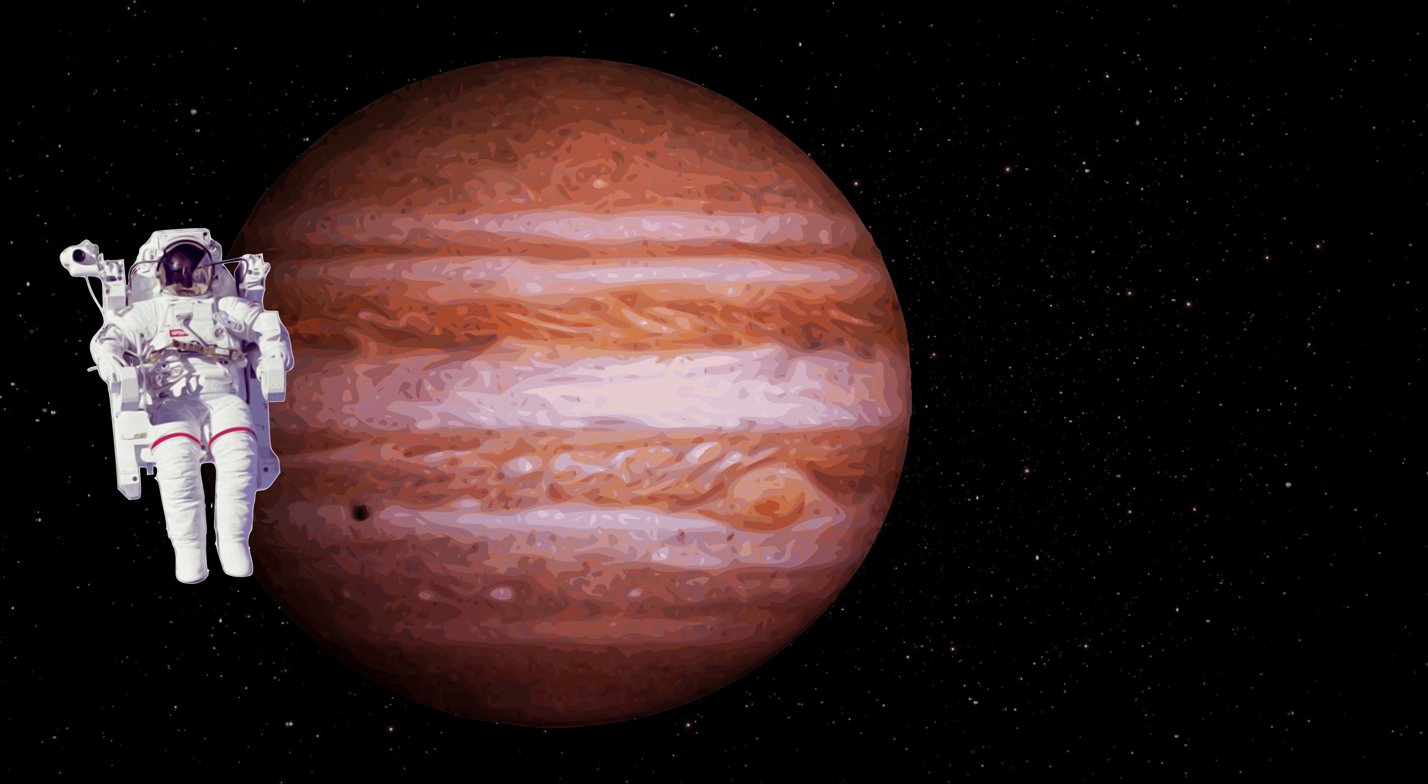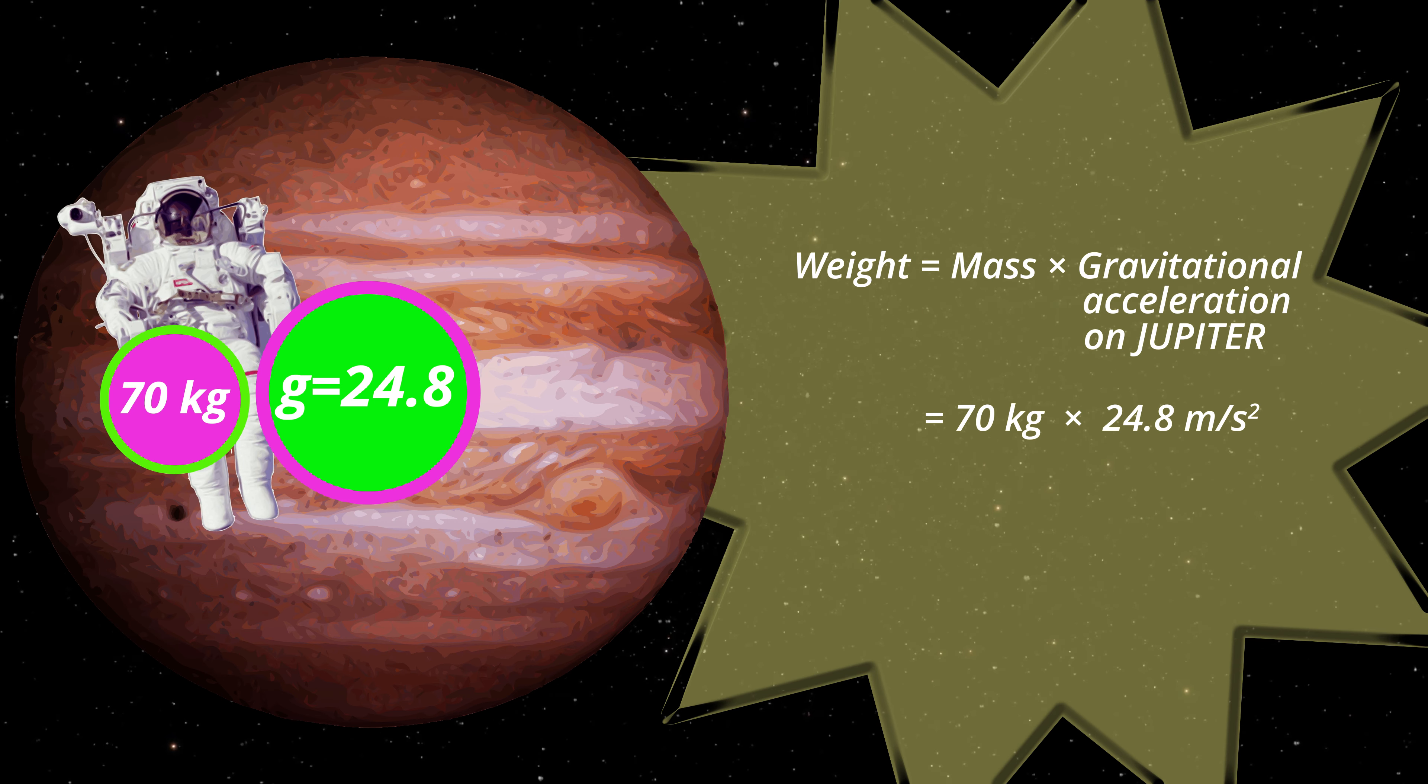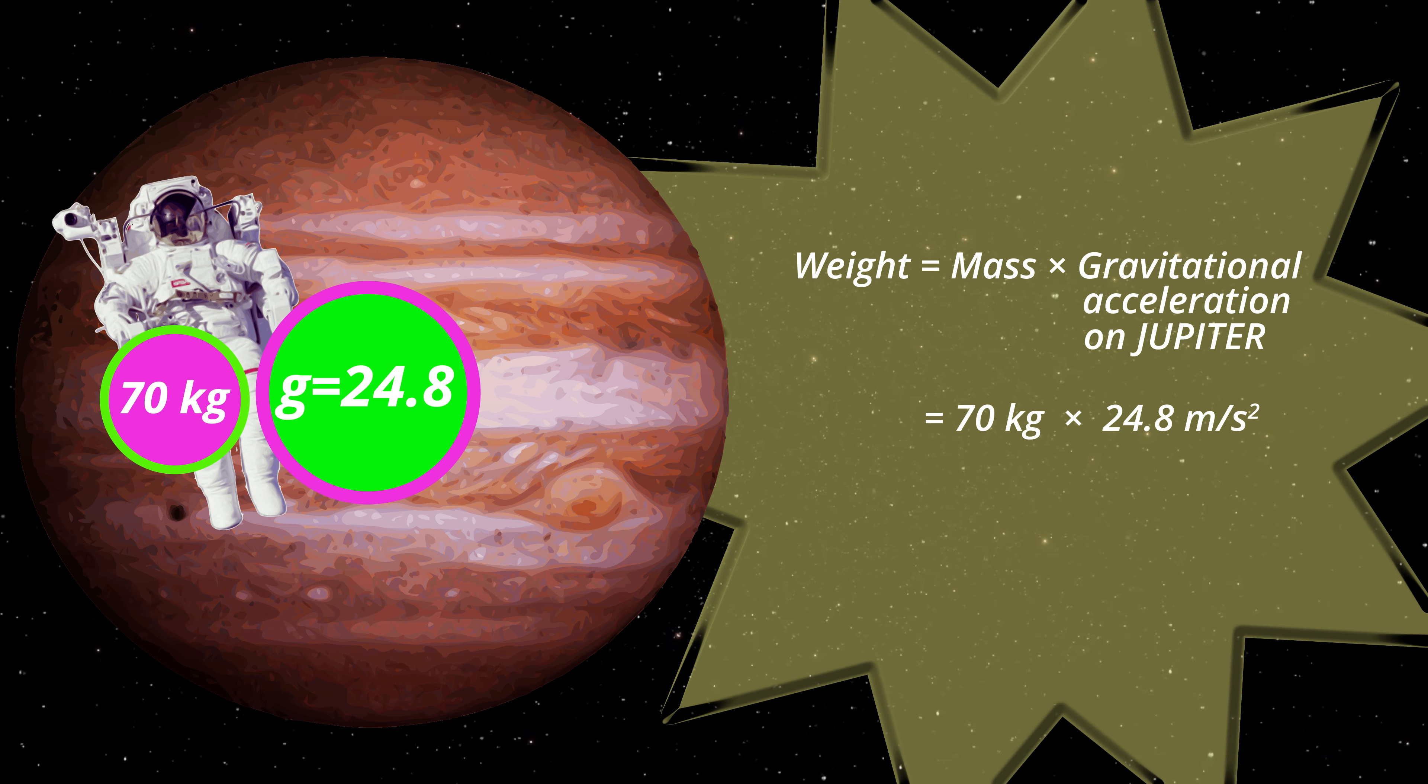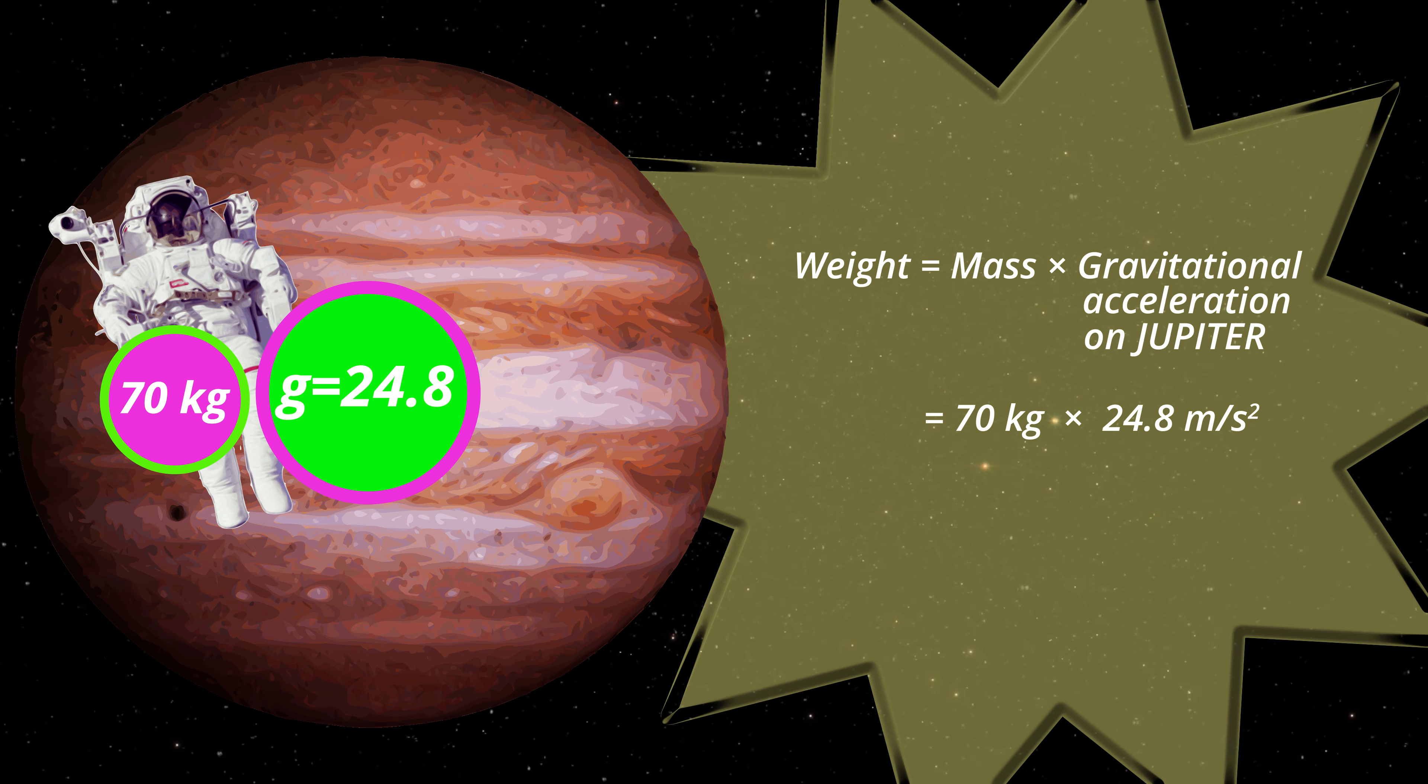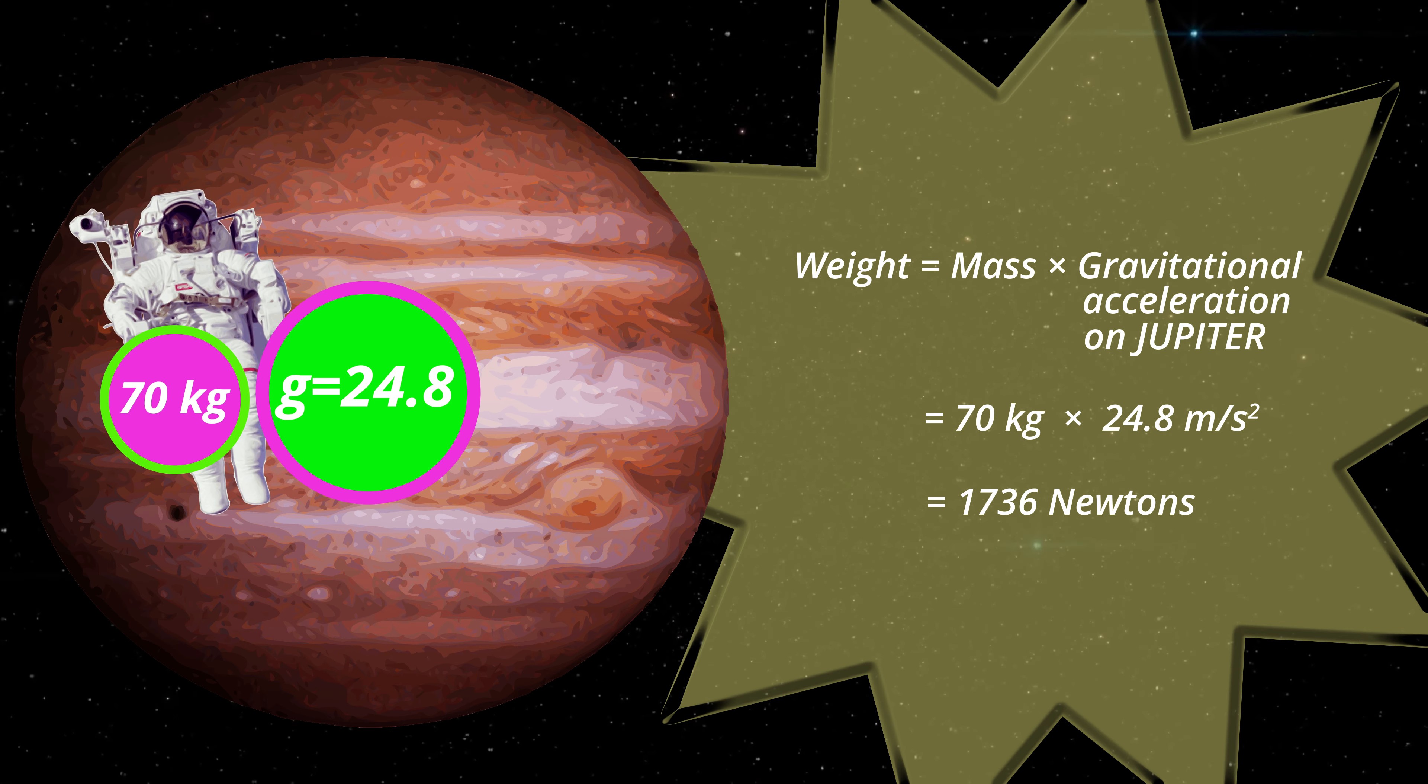Jupiter is the largest planet in our solar system. Its gravitational acceleration is 24.8 metres per second squared. If this astronaut could be weighed on Jupiter, her weight would be equal to her mass of 70 kilograms multiplied by Jupiter's gravitational acceleration of 24.8, and her weight would be a huge 1,736 newtons.